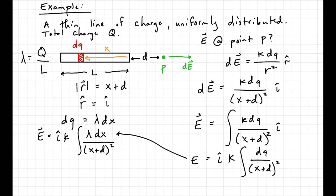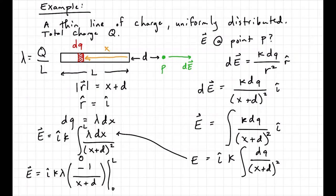Our bounds: x goes from 0 to l, integrating over the entire line of charge. So E equals î · k · lambda · integral from 0 to l of dx over (x+d)². Evaluating that, I get E equals î · k · lambda · [ -1/(x+d) ] evaluated from 0 to l. Plugging in the bounds: E equals î · k · lambda · [ -1/(l+d) + 1/d ]. We can simplify that further, but that's the result.